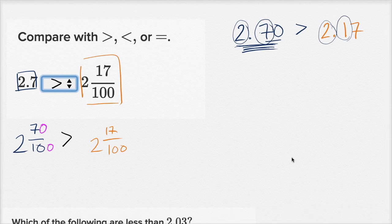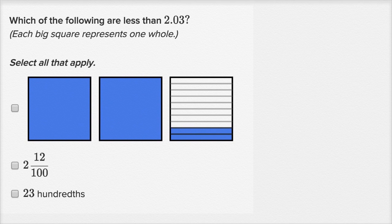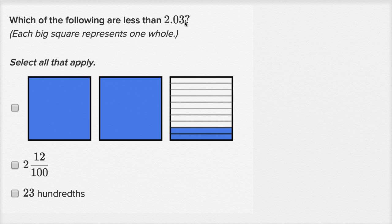Let's do another example. Which of the following are less than 2.03, or 2 and 3 hundredths? Each big square represents one whole. One way to approach this — the way that jumps out at me — is to write all of these as decimals.